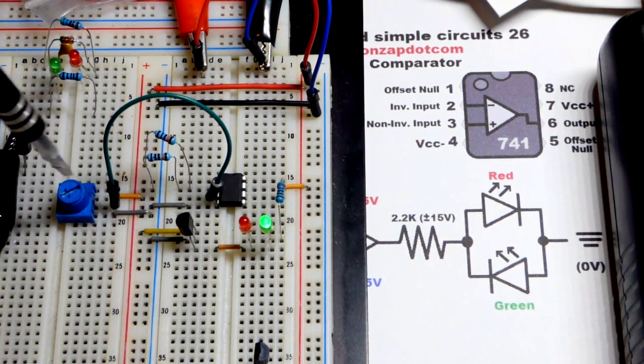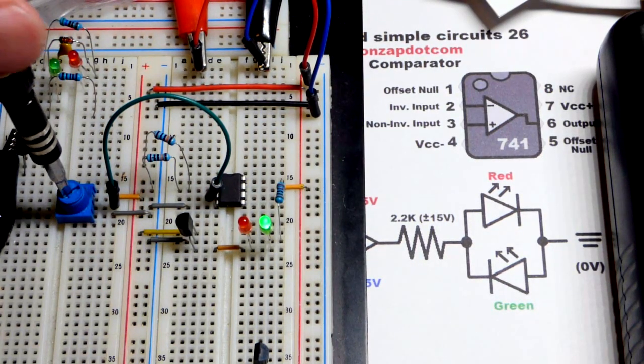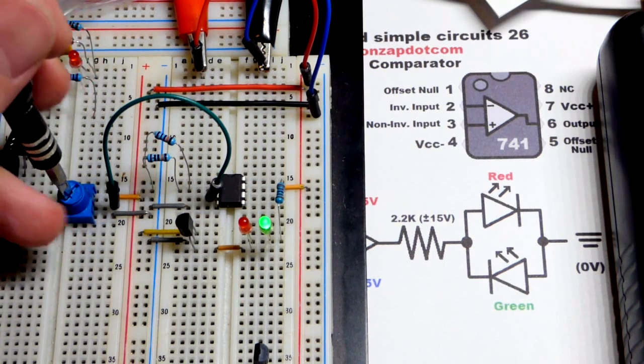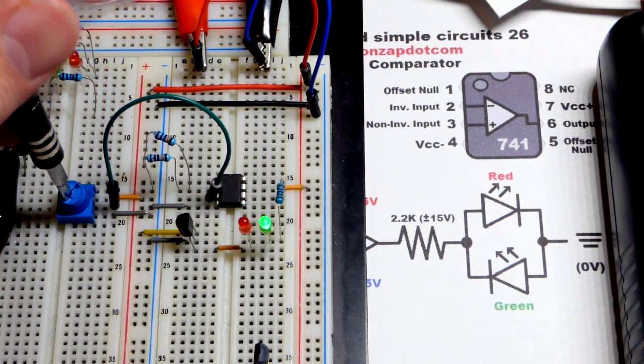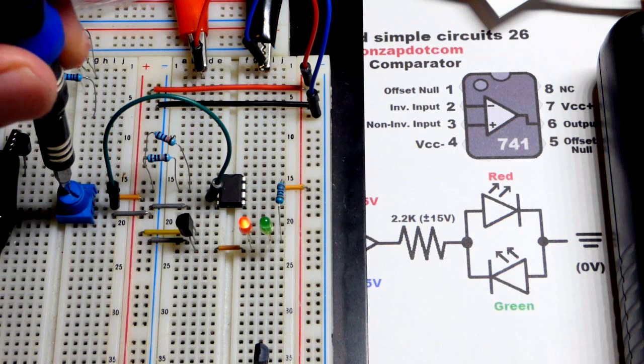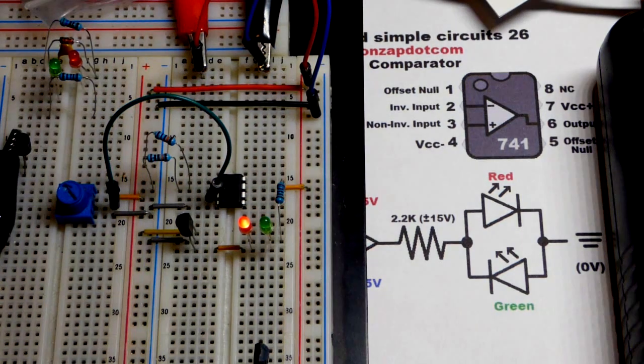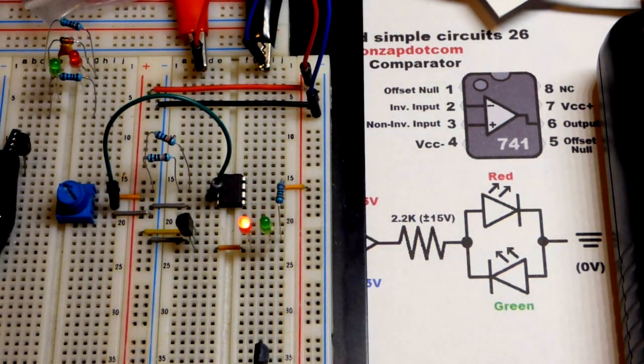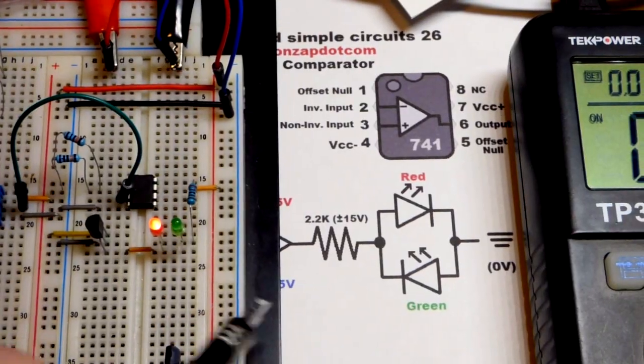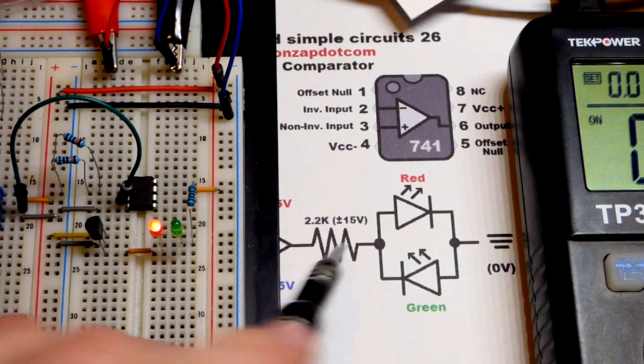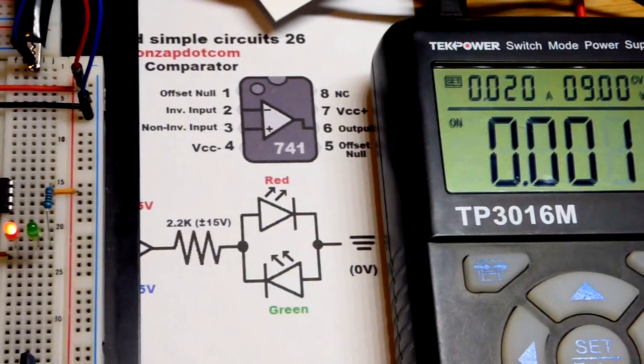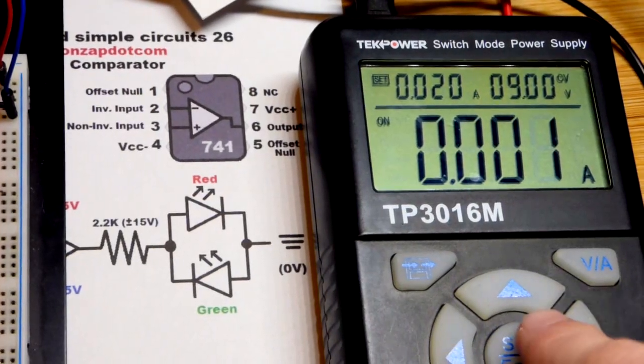So now we have a comparator. When I put a lower voltage than halfway with this trim pot, the green LED is lit up. When I go higher, the red LED lights up and they are not very bright. I'll lower the light. That's because we're using a fairly high value resistor right there for the voltage that we have right now. So you see 9 volts right there.